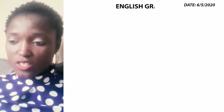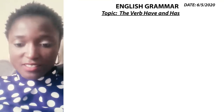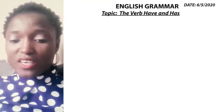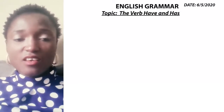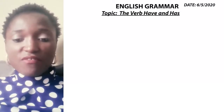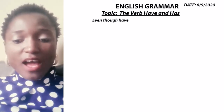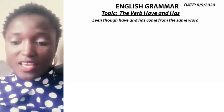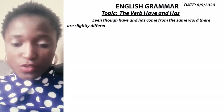Good morning parents and pupils. This morning we'll be having English grammar and we're looking at the verb have and has. All we are looking at is the verb have and has. And what is a verb? A verb is an action word. Even though have and has come from the same word, there are slight differences in the way they are used.